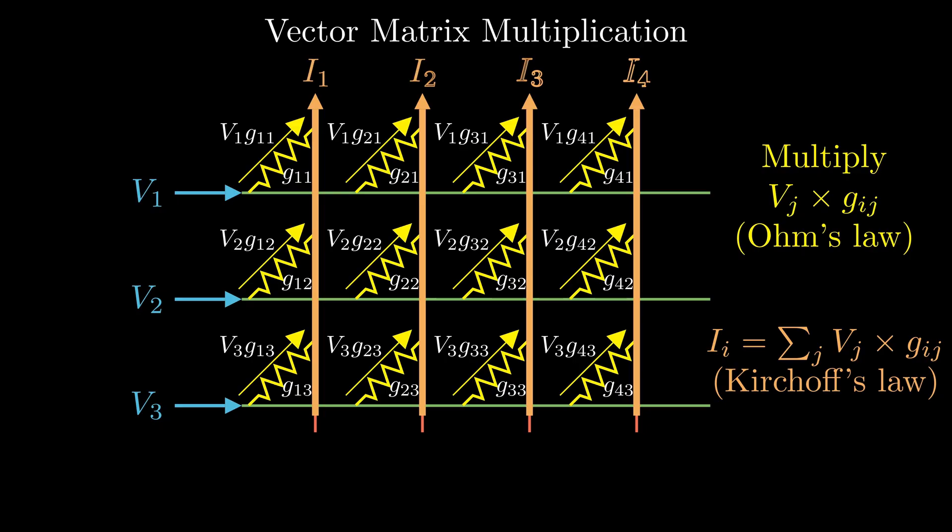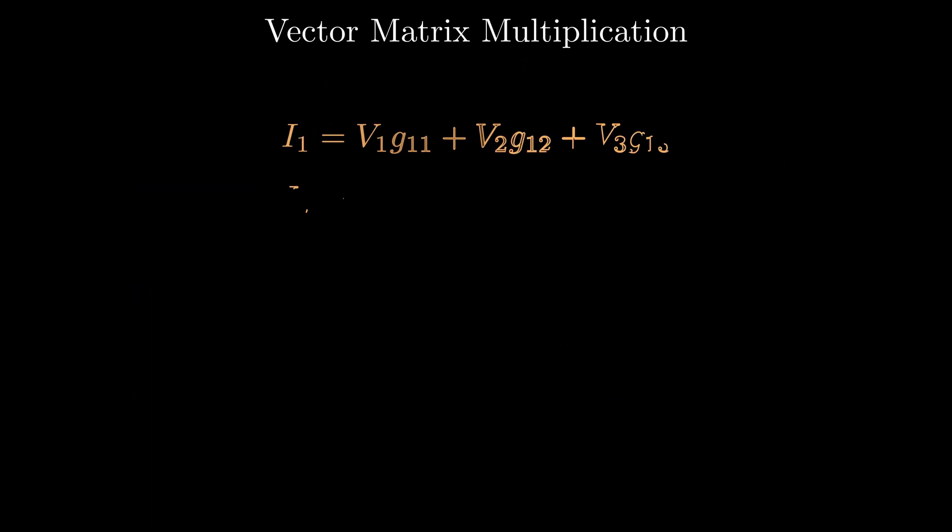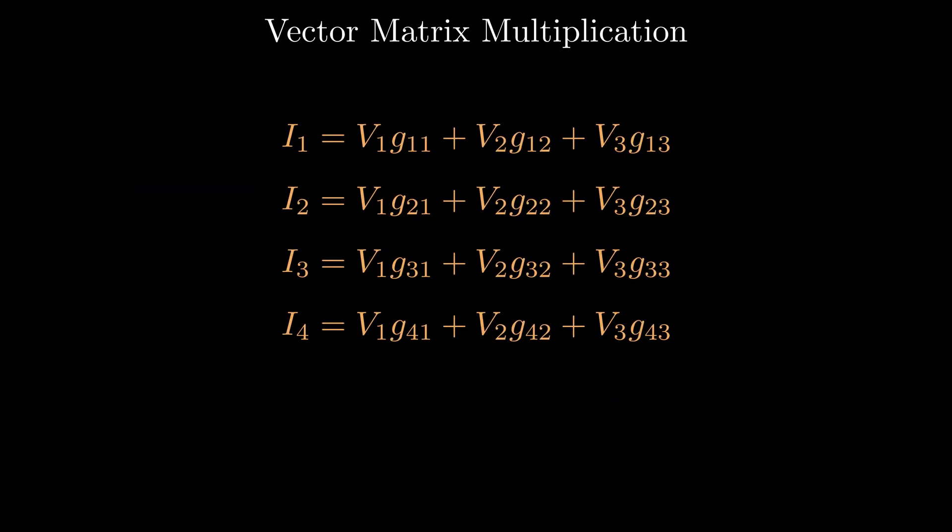Then Kirchhoff's law kicks in. The current from all the cells in each column add up all by themselves. That's accumulate. The total current flowing out of each column becomes one element of the output vector.